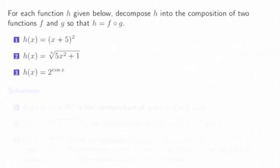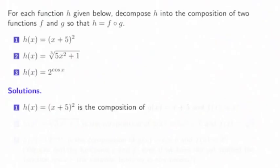Let's do some more examples. For each of the following functions, we're going to decompose h into the composition of two functions, f and g. Problem one: h of x is x plus 5, the quantity squared. Problem two: h of x is the cube root of 5x squared plus 1. Problem three: h of x is 2 to the cosine x. For problem one, think of h of x as x plus 5 all squared as a composition of the function that adds 5 and the function that squares things.